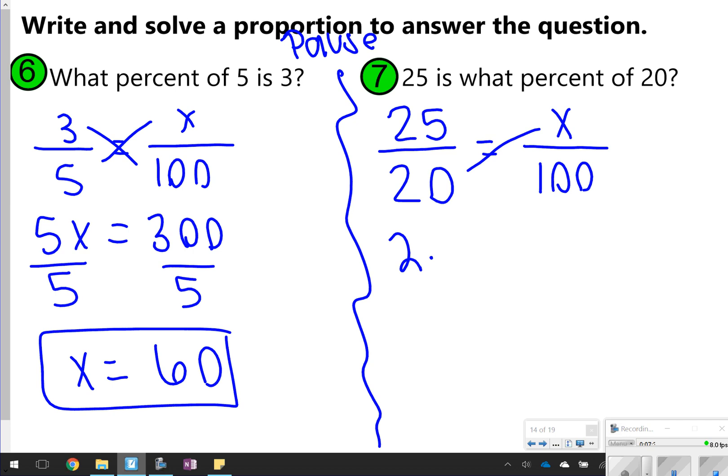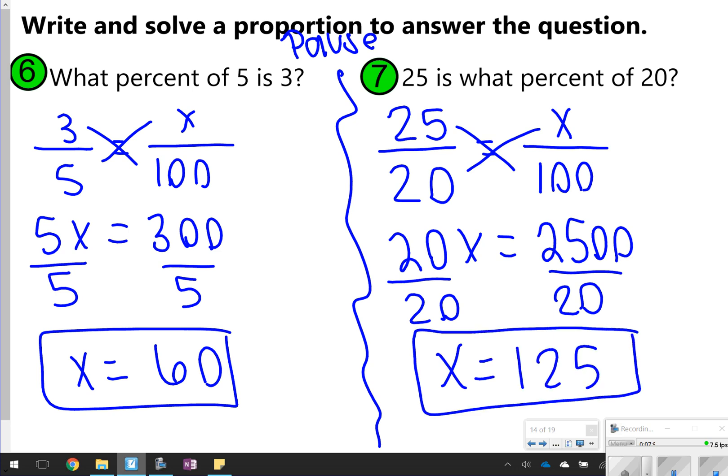Cross multiply, get 20x, and 2,500. So I'm going to basically take 2,500 and divide it by 20, so that x is equal to 125. So my answer, 25 is 125 percent of 20.